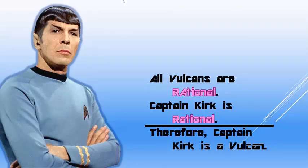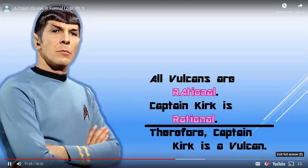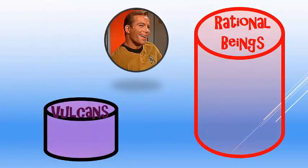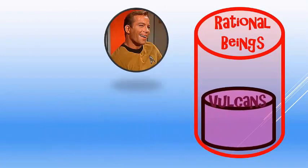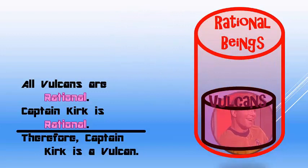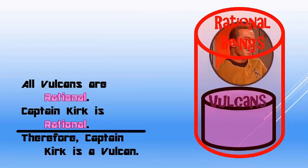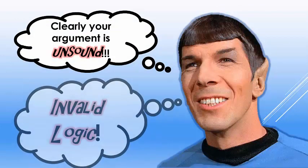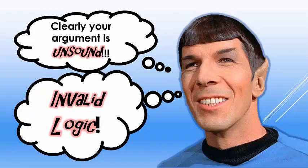Now let's take a look at a different example. What if we say all Vulcans are rational and Captain Kirk is rational? For those who buy into Star Trek lore, those are true premises. But what about the conclusion that Captain Kirk is a Vulcan? Suppose all Vulcans are rational and Captain Kirk is a rational being — that doesn't tell me whether or not he's a Vulcan. He could be anywhere in that rational category, and actually he's in the part that does not include Vulcans. So in this case, the argument is unsound, but for a different reason: the premises are true, but the logic does not lead to the conclusion. The logic is deductively invalid.